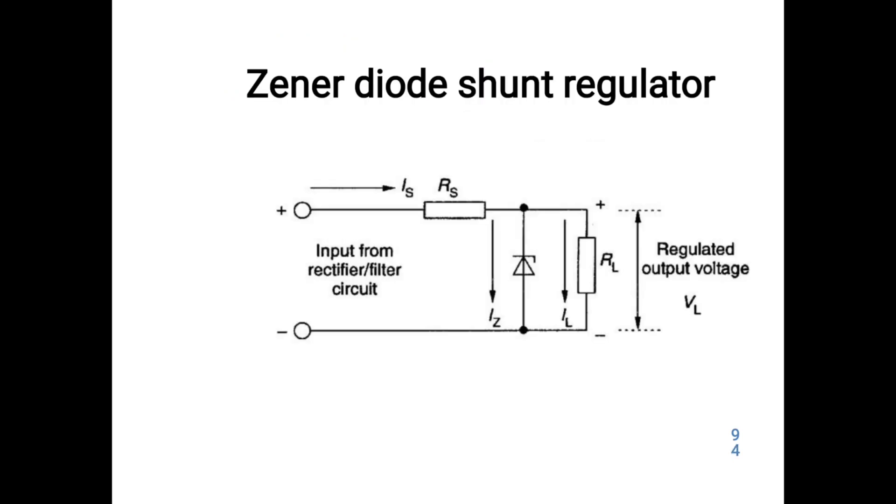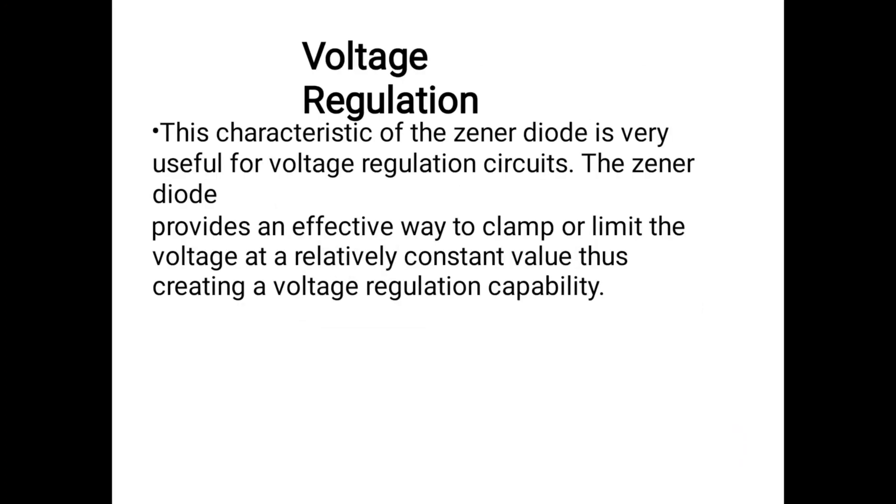The Zener diode is used with input voltage from the rectifier filter circuit under aggressive load conditions. The regulator uses the output for regulating output voltage. The source value of the Zener regulator is voltage regulation.